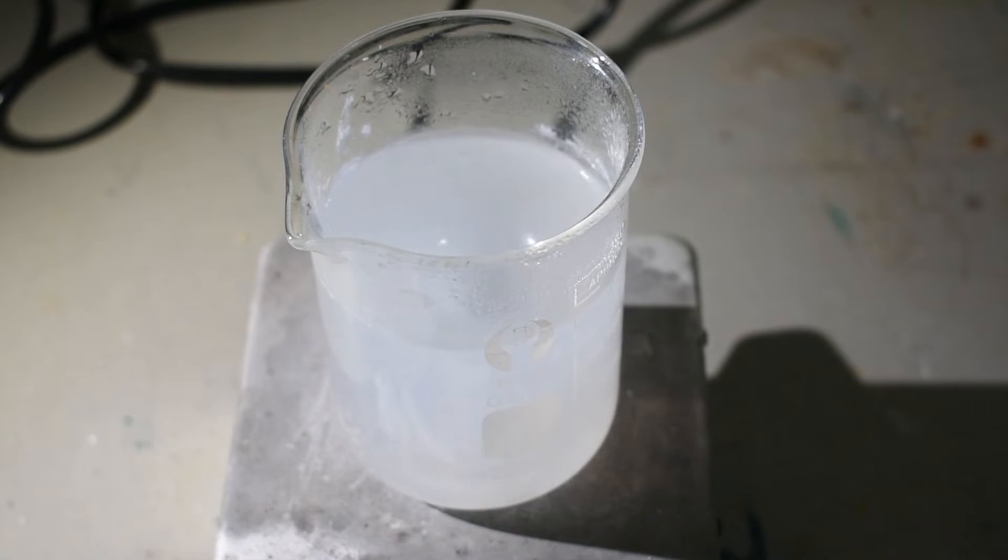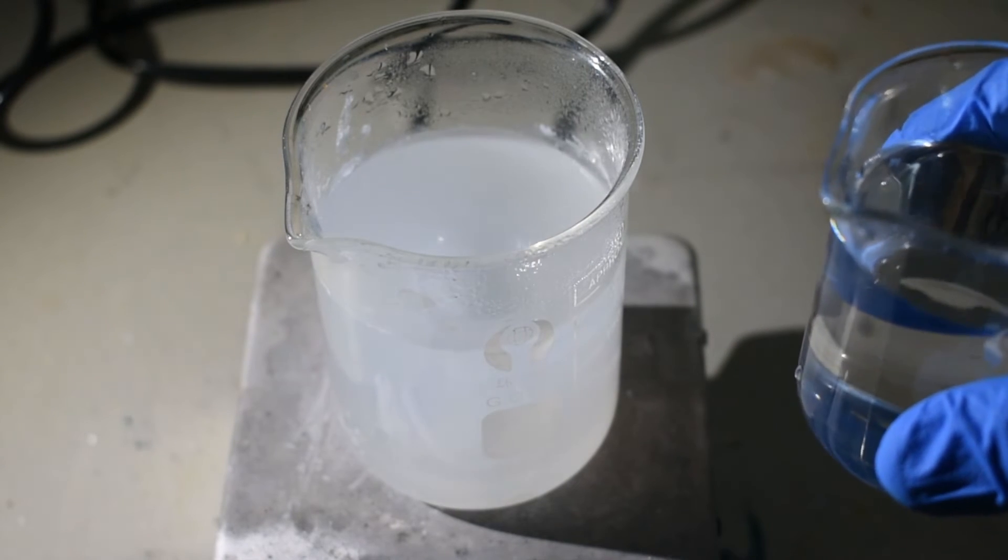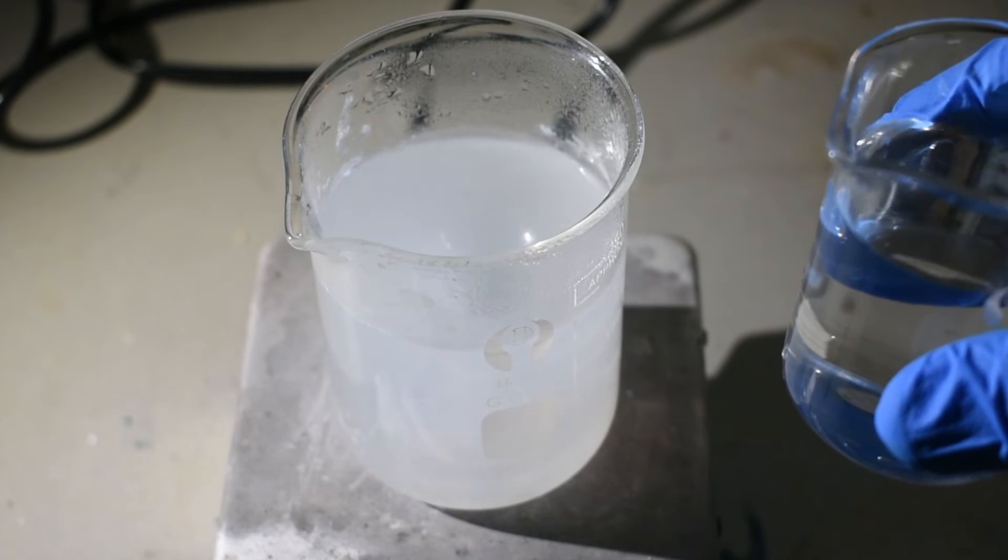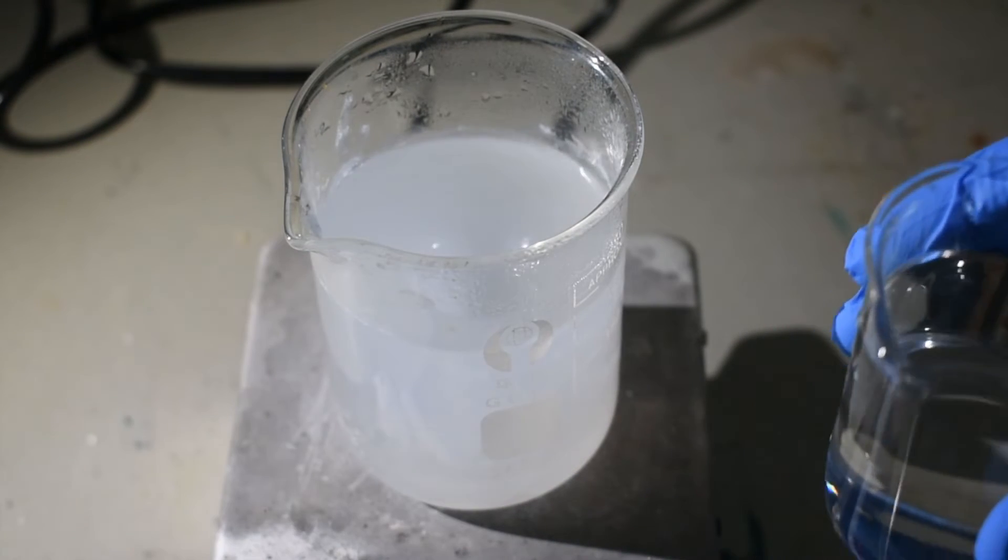But I'm just going to use this as is while it's hot, just in the interest of time. So, I'm going to add the 35% hydrogen peroxide very slowly until no more solid barium peroxide is seen upon addition of hydrogen peroxide.